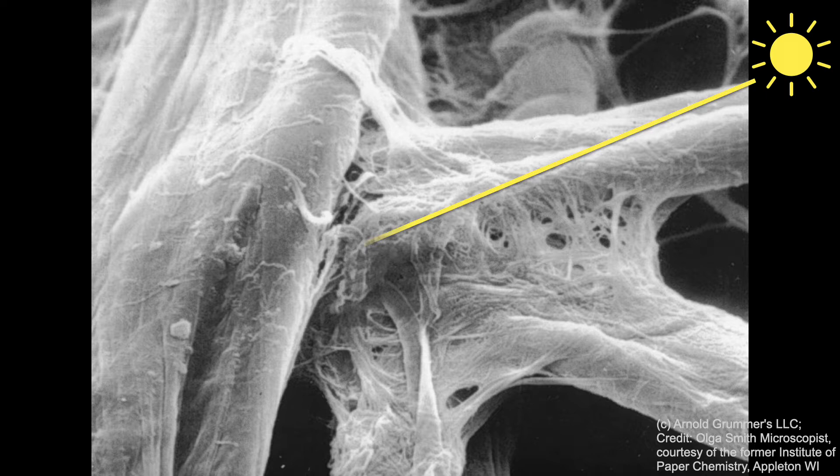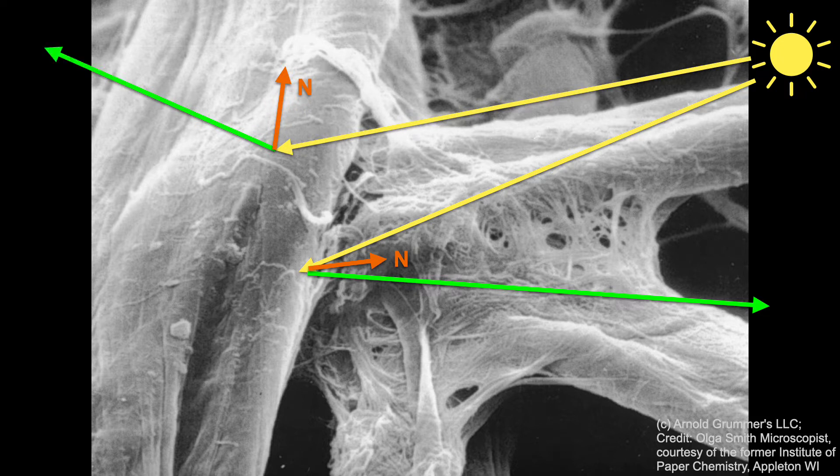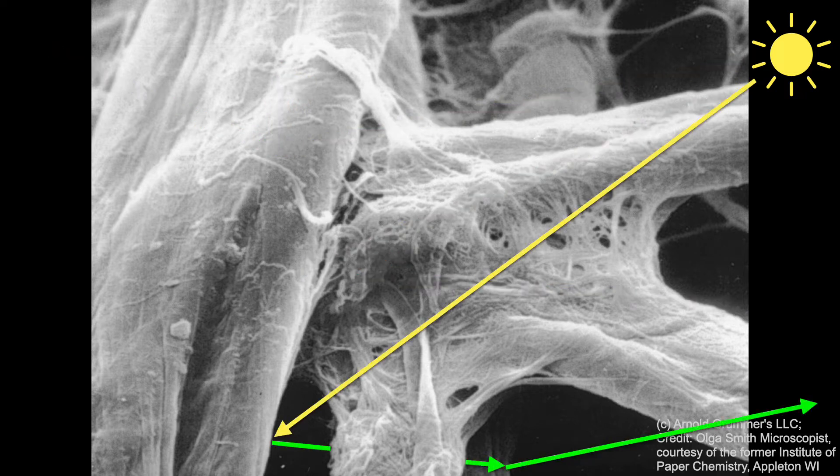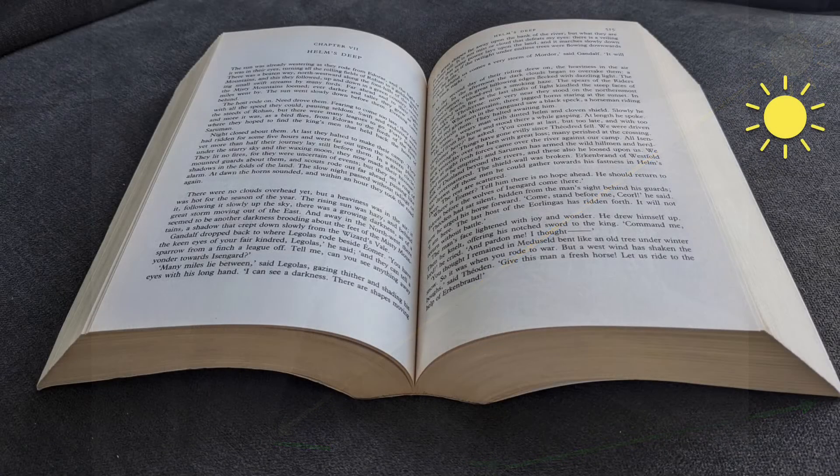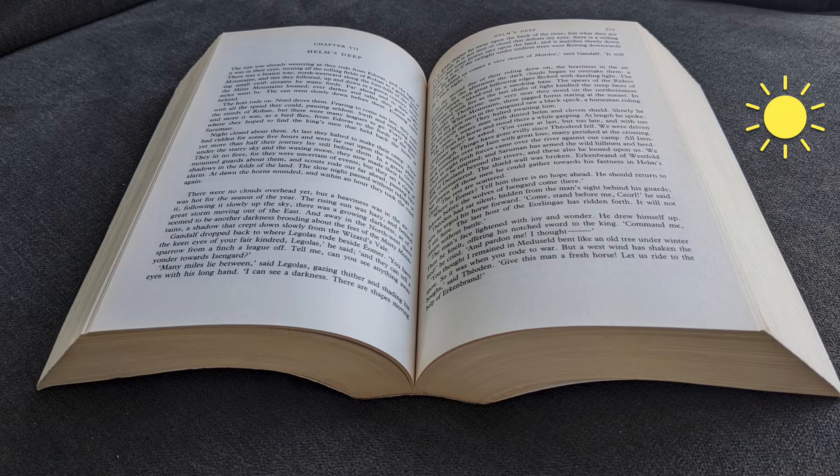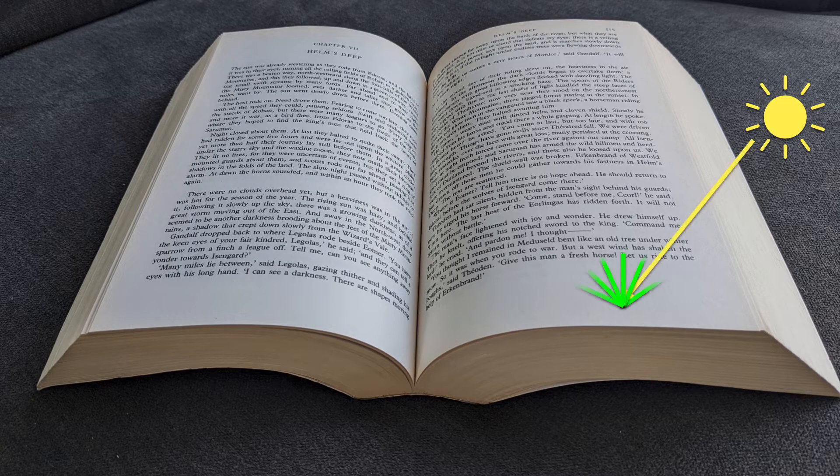Now imagine a photon coming in. It's going to hit some part of the surface and bounce off. But if it hits this point instead, it will bounce in a different direction. Another photon falls into a hole, bounces around a few times, and comes out somewhere else. If we zoom back out, it will look like incoming photons get reflected out in all directions.